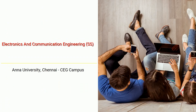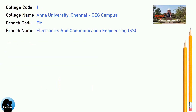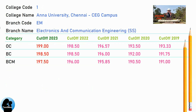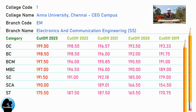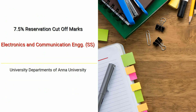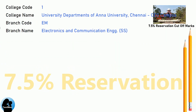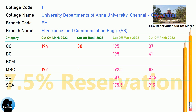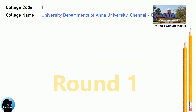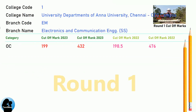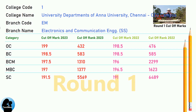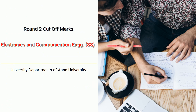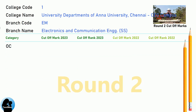DNA Cut-Off for Anna University Chennai CEG Campus in Electronics and Communication Engineering. DNA 7.5 Reservation Cut-Off for Anna University Chennai CEG Campus in Electronics and Communication Engineering. DNA Round 1 Cut-Off for Anna University Chennai CEG Campus in Electronics and Communication Engineering. DNA Cut-Off for Anna University Chennai CEG Campus in Electronics and Communication Engineering.